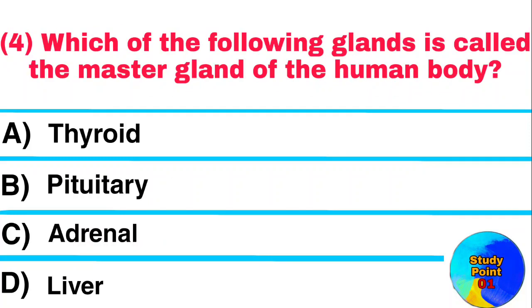Question: Which of the following glands is called the master gland of the human body? Answer: Pituitary.